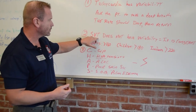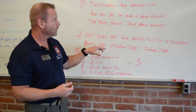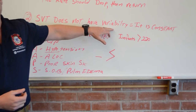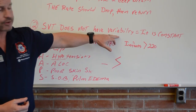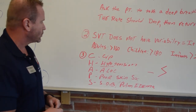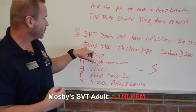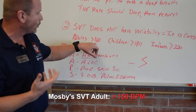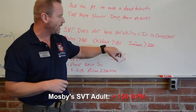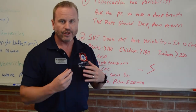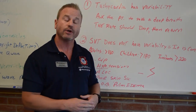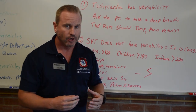SVT, supraventricular tachycardia, does not have the variability that sinus tach does — it is constant. Our normal rates for adults are about over 160, children over 180, infants over 220. When these patients are crying, stressed, or talking, that rate doesn't change.